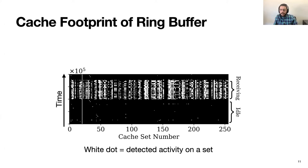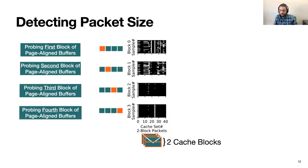The y-axis represents passage of time. We see obvious activity on most of the probed cache sets when the network is receiving packets. Now that we can detect the arrival of packets, the question is: can we also detect the size of incoming packets?